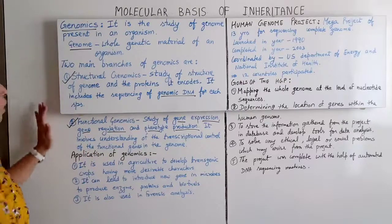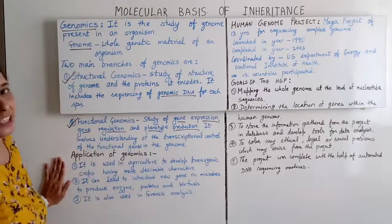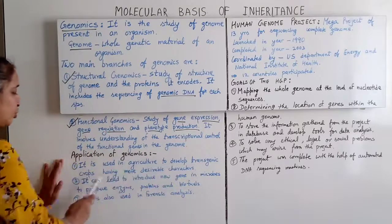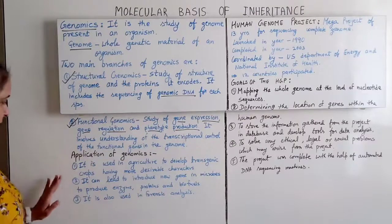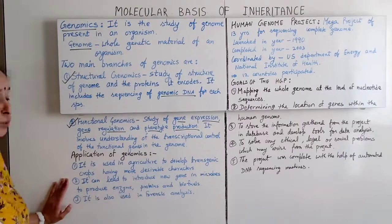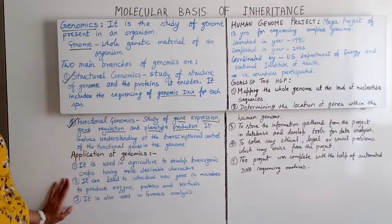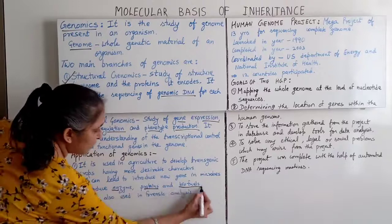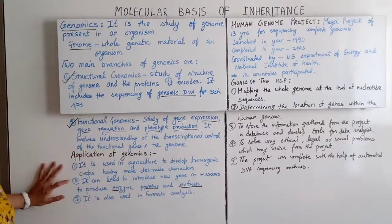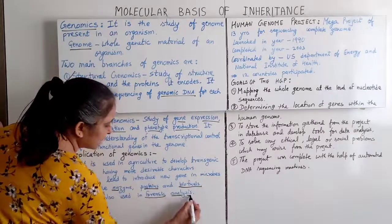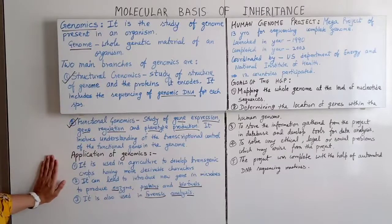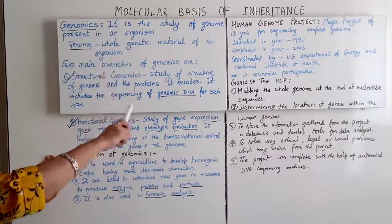Applications of genomics: first, it is used in agriculture to produce transgenic crops having more desirable characteristics. Second, it can lead to the introduction of new genes in microbes to produce enzymes, proteins, and biofuels. Third, it is also used in forensic analysis.